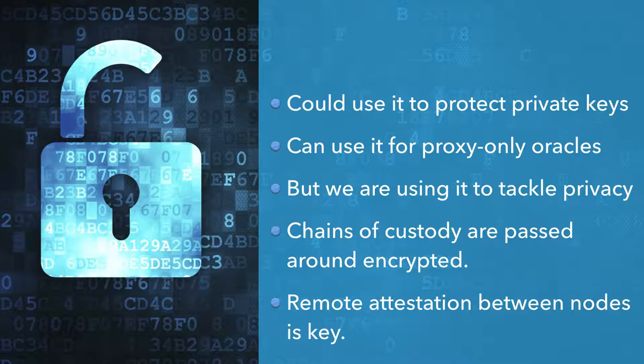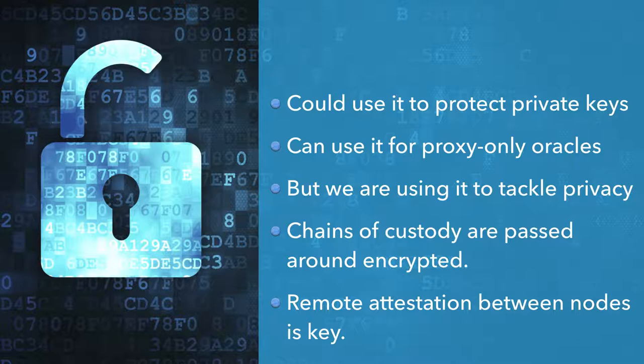We are using SGX to tackle privacy. The way this works is that a chain of custody — the set of financial transactions leading up to, for example, a payment you have received, or the latest state of a deal, all of the history of the ledger leading up to that point — is being encrypted and passed around the network encrypted. Thus, if I wish to send you money and need to convince you that I am the rightful owner of the money I'm sending, what I can do is encrypt that chain of custody to your enclave, send it to the enclave, you can check it, and you will convince yourself that I do in fact have this money legitimately — that all of the transactions leading up to that point were correctly signed, don't create money out of nothing, and so on.